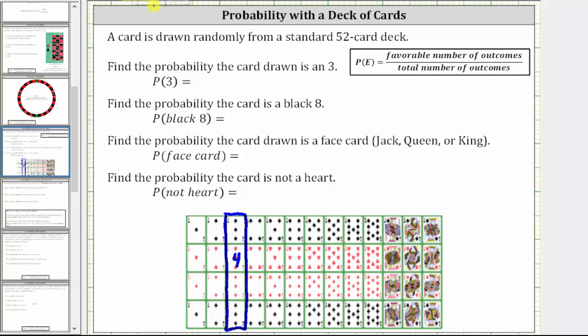Therefore, the probability the card is a 3 is 4 divided by 52, or 4/52, which does simplify. The greatest common factor between 4 and 52 is 4, so we divide both by 4 to simplify. The simplified probability is 1/13.